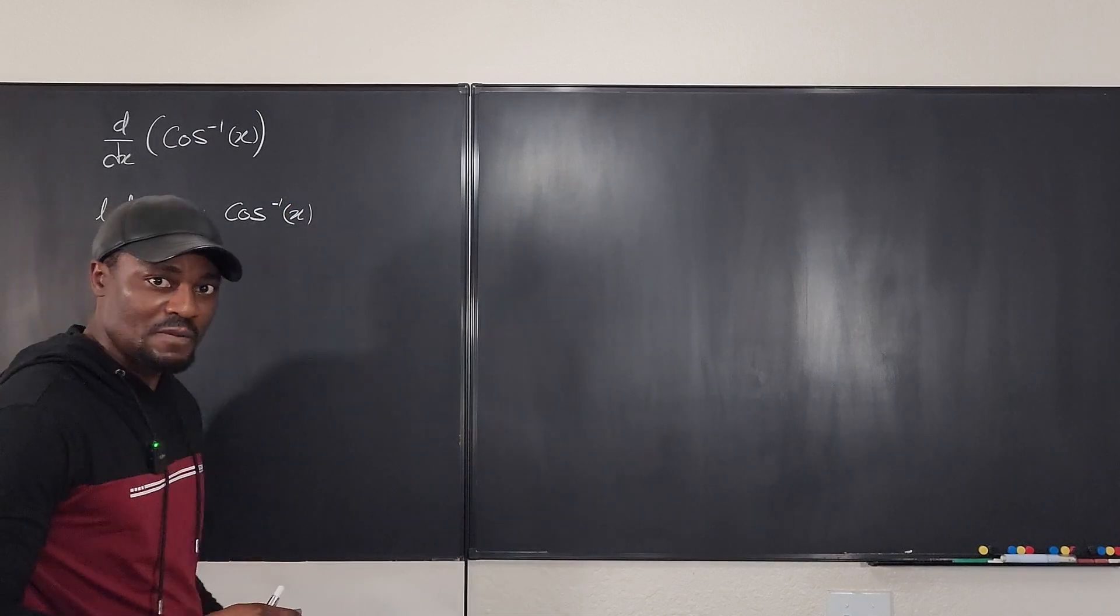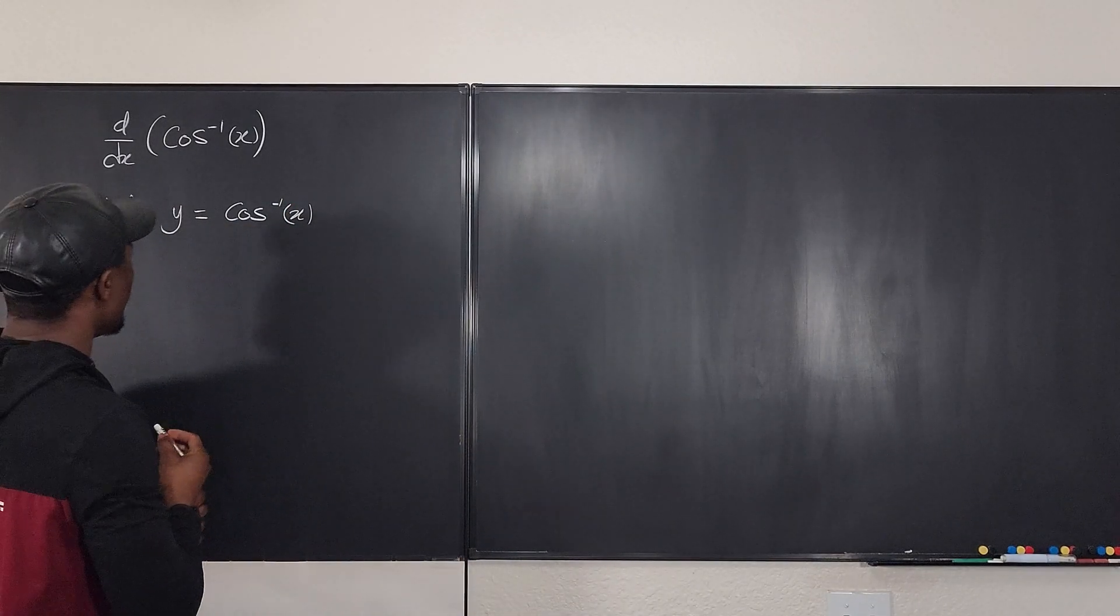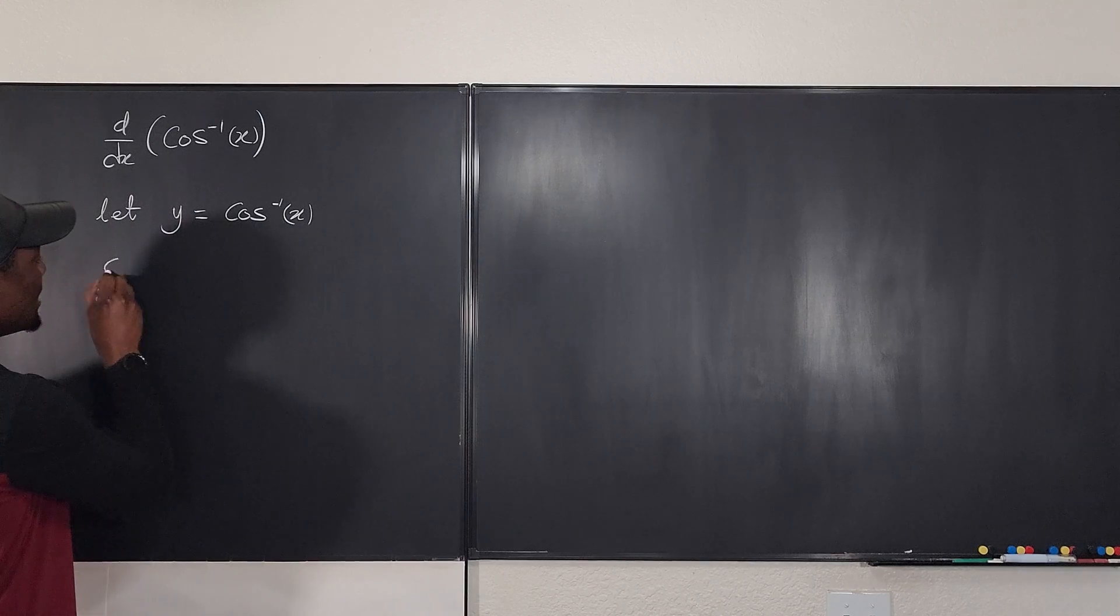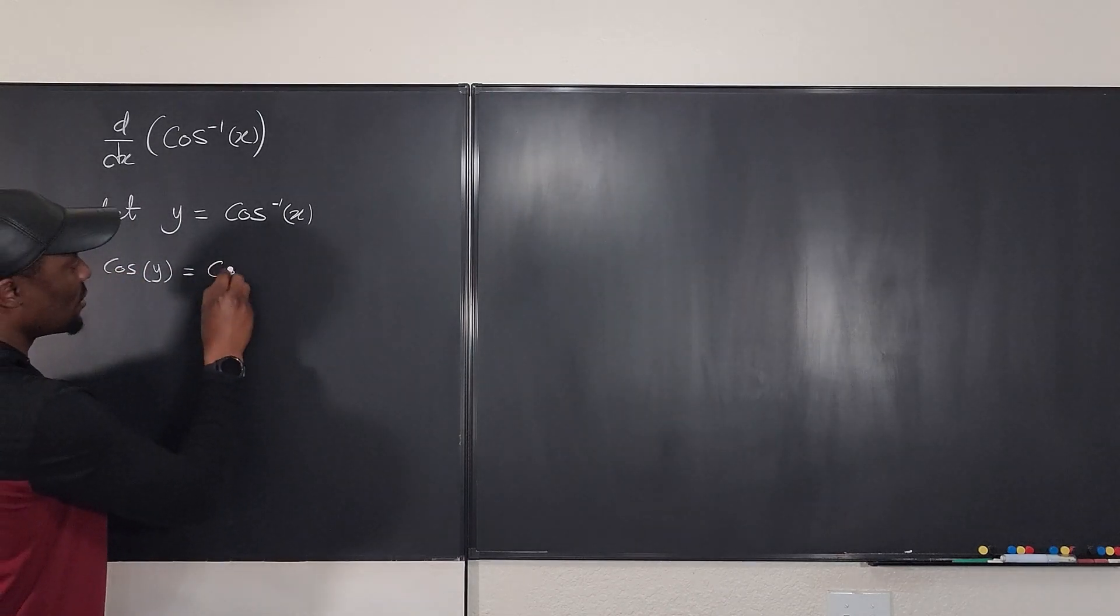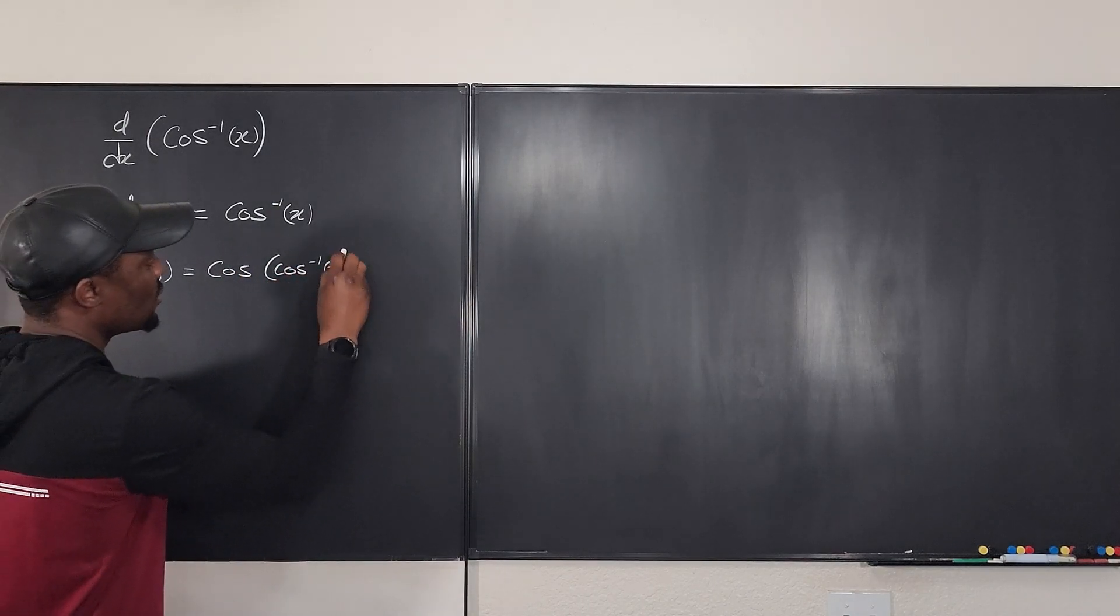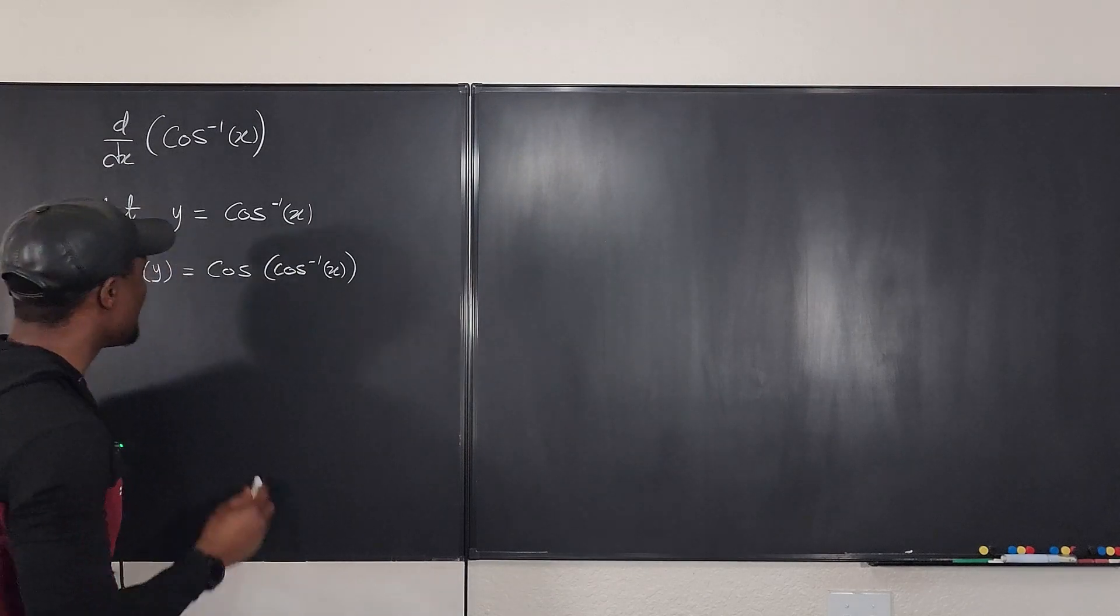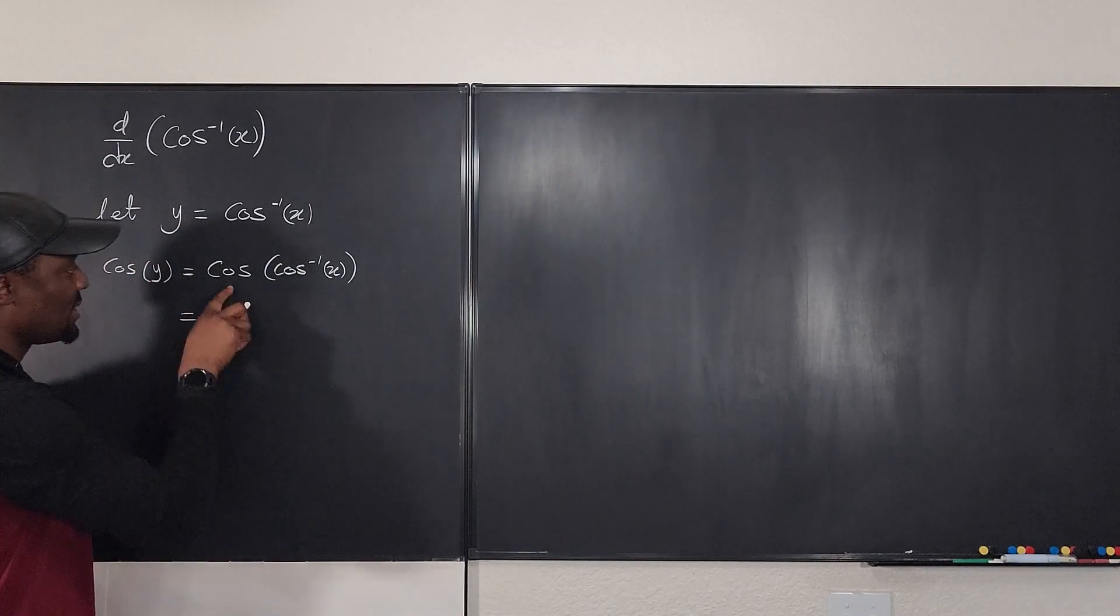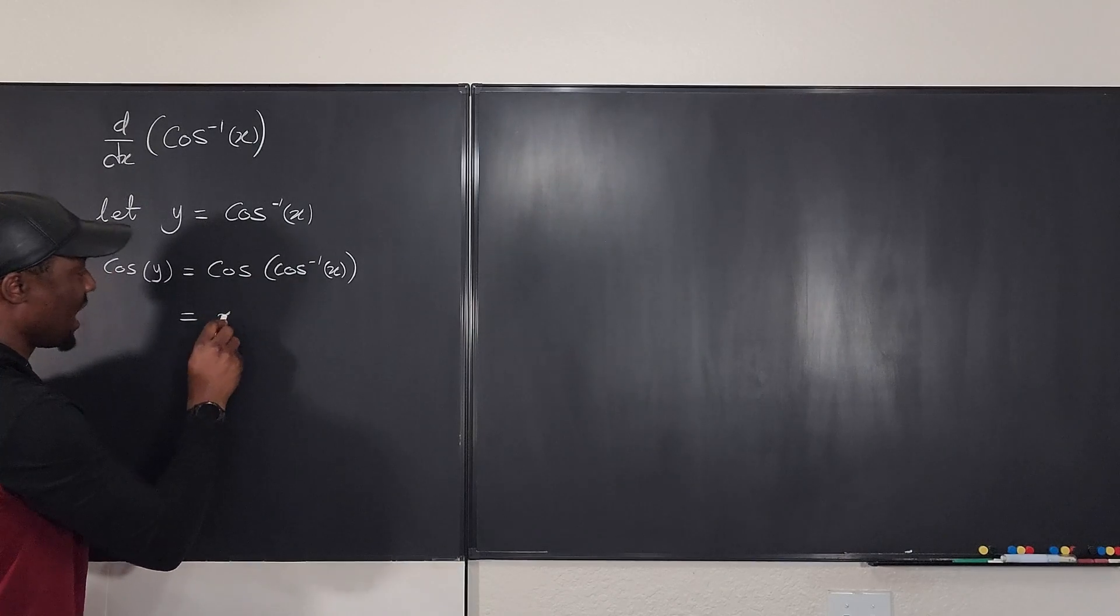And you know what this means? It means that if I take the cosine of y, then I can also take the cosine of inverse cosine of x. So you take the cosine of both sides, you still get the same result. Well, we know that the cosine of this, this will undo this and you get x.